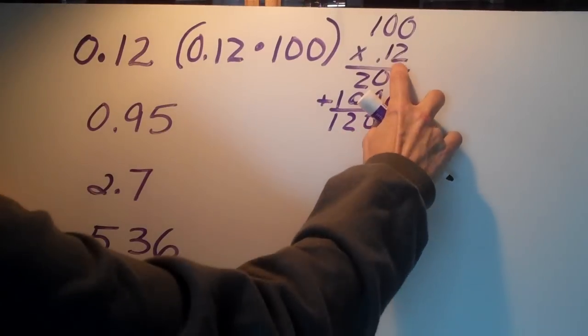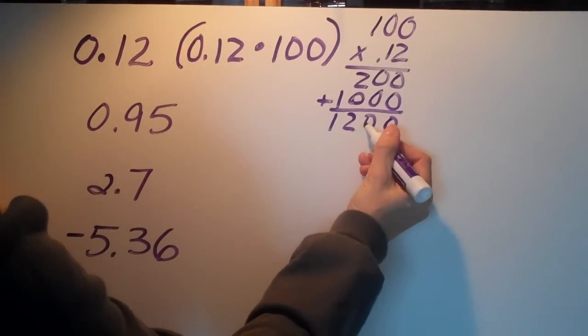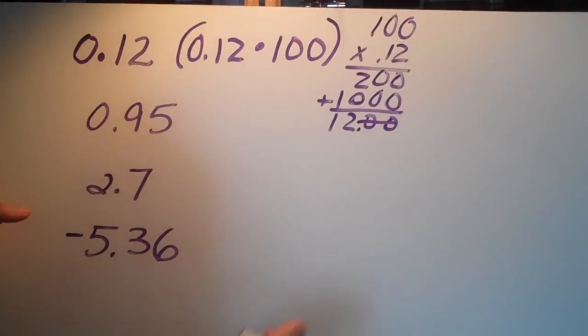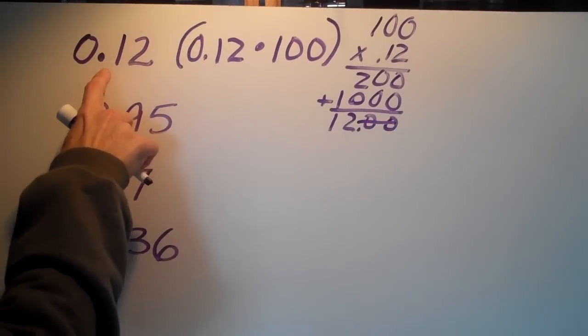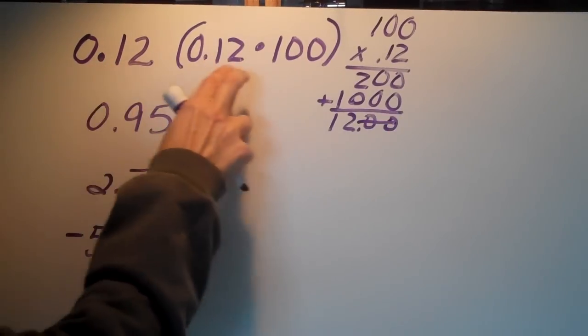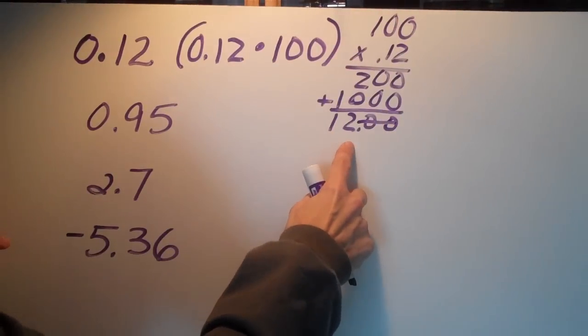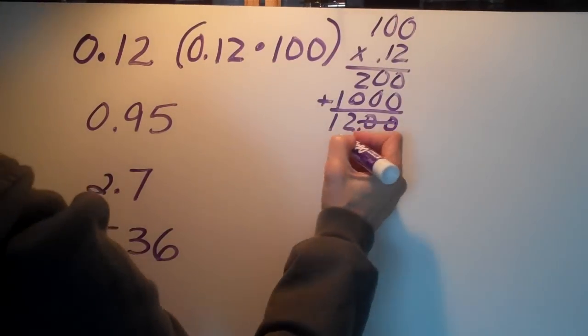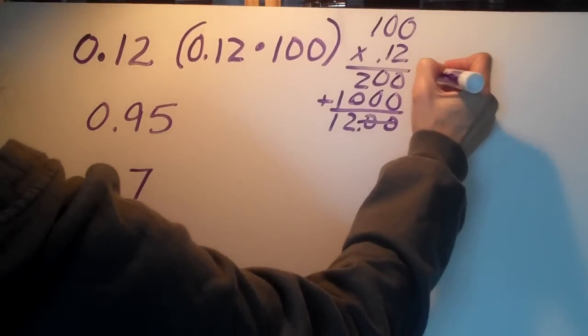We would get this number. We know we go two places over and we get our answer is 12. So going from a decimal to a percent is the same as multiplying by 100. So once we multiply, this becomes 12 percent.